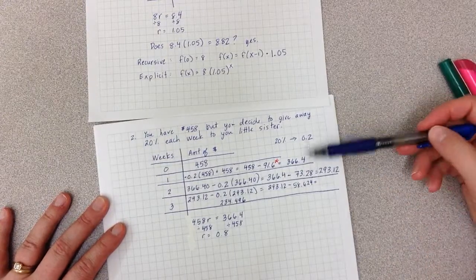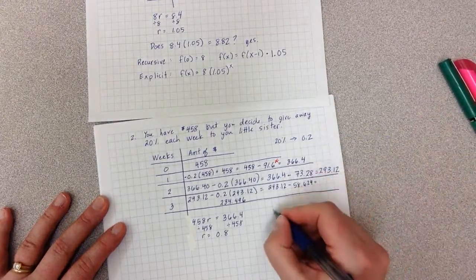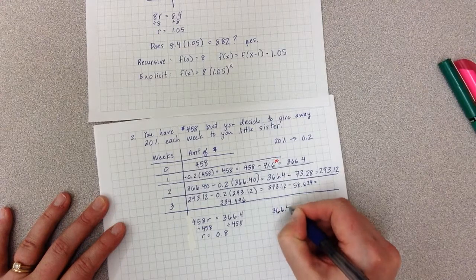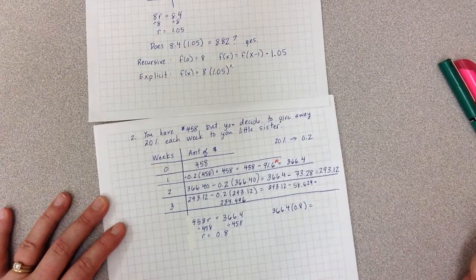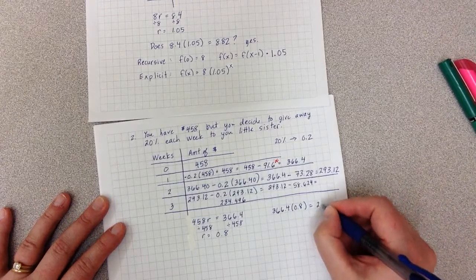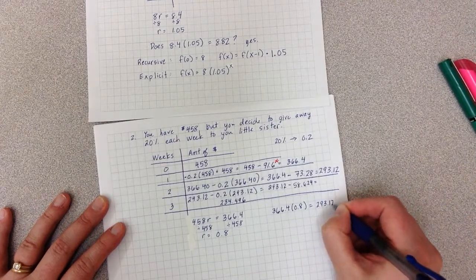And I can test that and say, does 366.4 times 0.8 equal what I need? And lo and behold, it equals 293.12. So my r is the correct value. So now I can write my recursive.